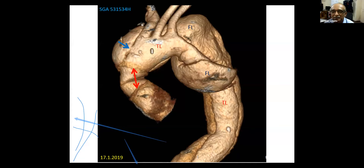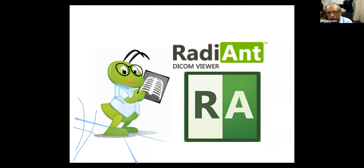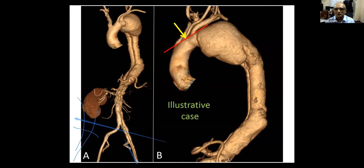George agrees that open surgery, if performed by a confident surgeon, is probably the best approach, but it would be very extensive and high-risk. In this case, the referring surgeon — who performed the original operation — was not keen to re-operate, so they explored the possibility of endovascular repair. George introduces the planning software he uses for CT-based procedural planning, which is freely available for download.